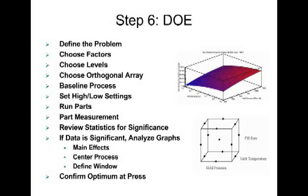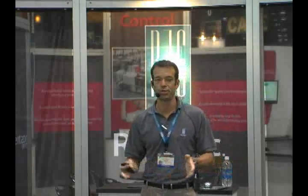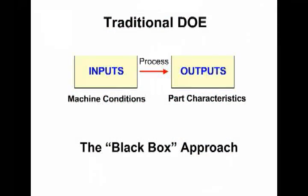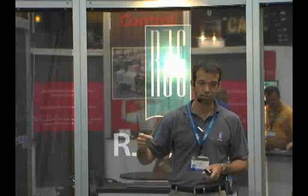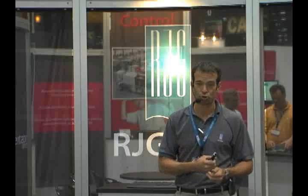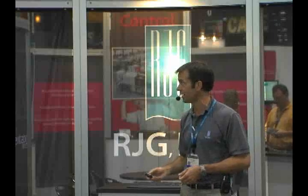There are some problems associated with DOE. They would best be described as garbage in, garbage out. If you don't pick the correct variables as part of your DOE, the output of that DOE — which should indicate the variables that impact the part you're molding — won't be accurate. You change another area of the process and you get into a loop where you're chasing your tail. So it's very important that during the DOE phase you select the appropriate variables.